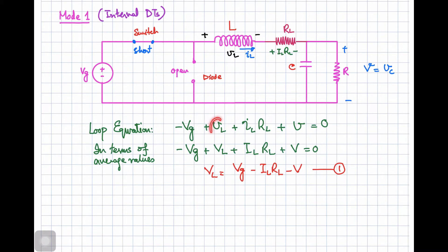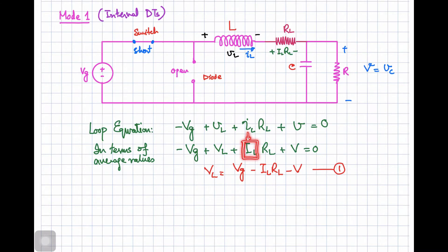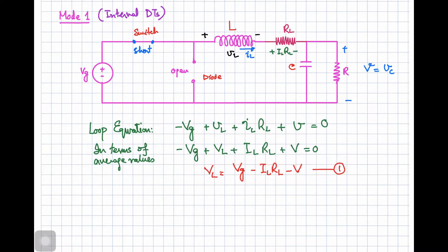Here, small vL and iL represent the time-varying inductor voltage and current. Considering the average voltage, we replace small vL with capital VL representing the average inductor voltage, and iL with capital IL, effectively neglecting the small ripple. From this equation we can work out the inductor voltage expression for the first mode of operation when the main switch is on.